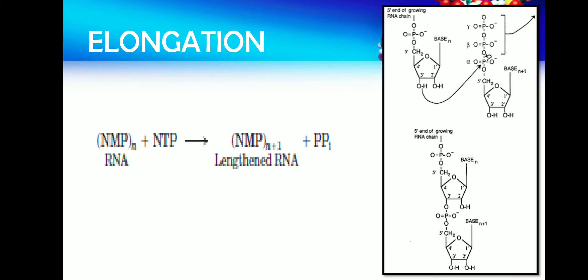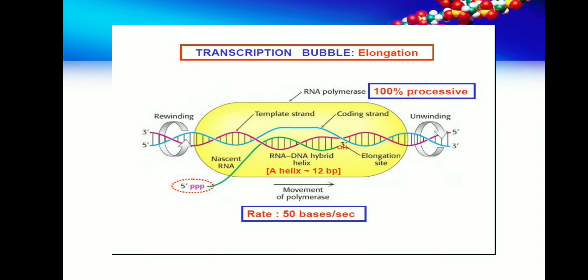Only eight or nine nucleotides of the growing chain will always remain base-paired to the DNA template at any given time. The remainder of the RNA chain will be peeled off and directed out of the enzyme through the RNA exit channel. Only eight to nine nucleotides will always be bound to the DNA when the RNA polymerase is synthesizing RNA; the rest is always peeled off and directed outside through the RNA exit channel.